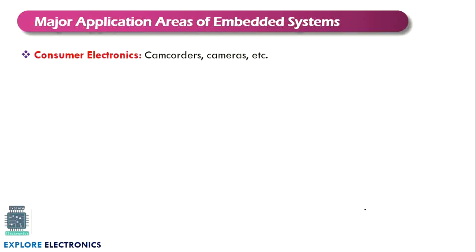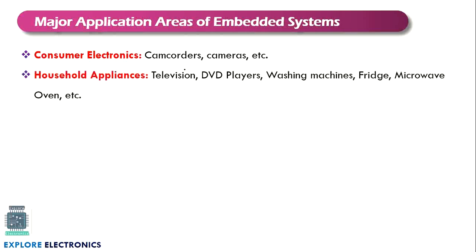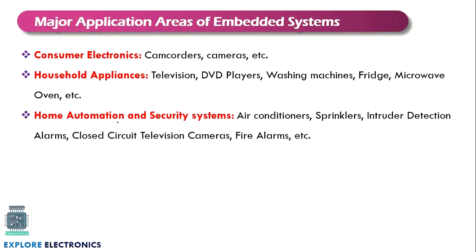The major application areas of embedded systems include consumer electronics — one of the biggest areas — where we see camcorders for video recording, cameras, and household applications like televisions, DVD players, CD players, washing machines, fridge, microwave, and oven. Home automation systems such as AC, sprinklers, intruder detection systems that sound a siren automatically, closed-circuit television cameras, and fire alarms are also areas where embedded systems are used.